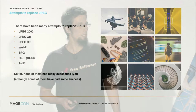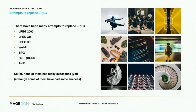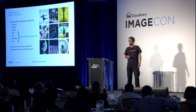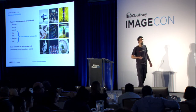There have been many attempts to replace JPEG before. The JPEG committee itself has produced JPEG 2000, JPEG XR, and JPEG XT. There have been various video codecs that have been turned into image formats, like WebP which is based on VP8, like BPG and HEIC which are based on HEVC, and more recently the AVIF image format. But so far, none of these attempts have actually succeeded in replacing JPEG — at least not yet.